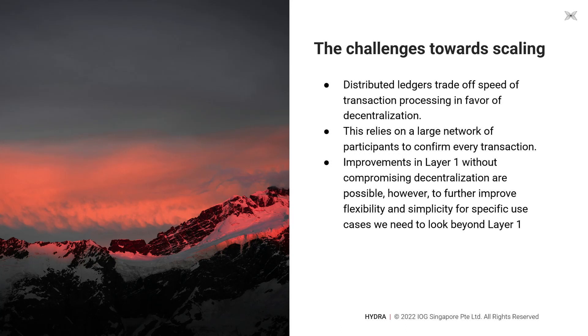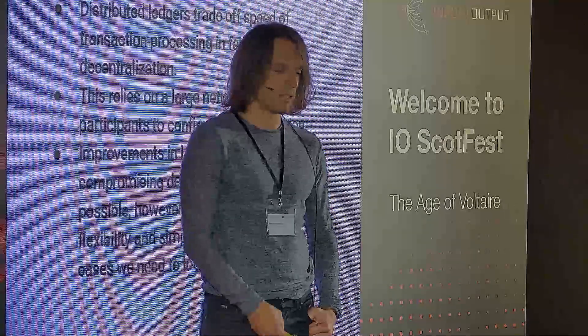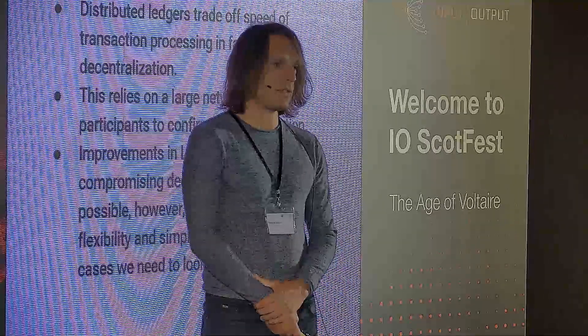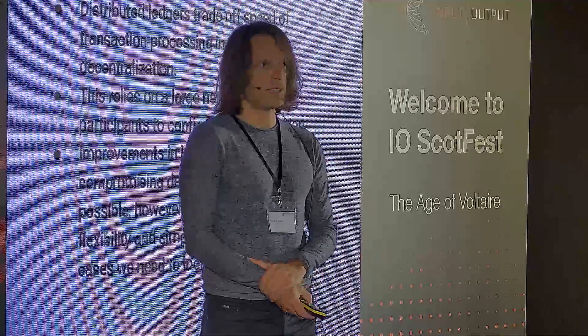Layer one blockchains can be optimized to increase their capacity to handle more transactions in a number of ways. One of them is input endorsers, and a number of other ways were discussed earlier in these sessions. But it will still require the large network to agree on the current state of the system. We can go above and beyond these optimizations in layer one and actually offload some of the transaction processing away from layer one, freeing up capacity for applications that need their transactions confirmed on layer one. It will also allow us to make different trade-offs with regards to decentralization, security, and scalability than those we've agreed to make on layer one.